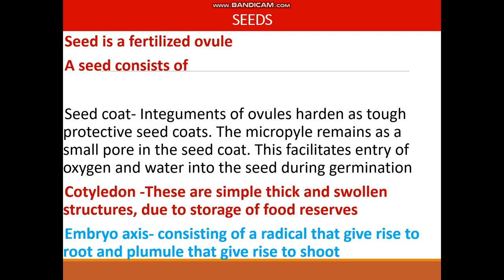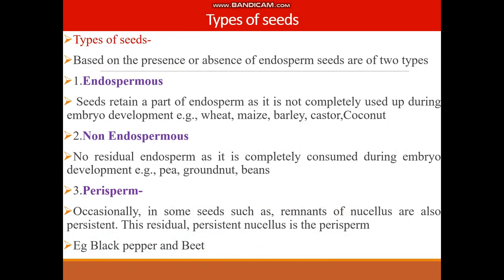Seeds develop from a fertilized ovule. The main parts of the seed are the seed coat — which are the integuments of the ovule — the cotyledon that stores food, and the embryonal axis consisting of a radicle and a plumule. There are different types of seeds: endospermic seeds retain endosperm, whereas in non-endospermic seeds, the endosperm is completely consumed during embryo development.